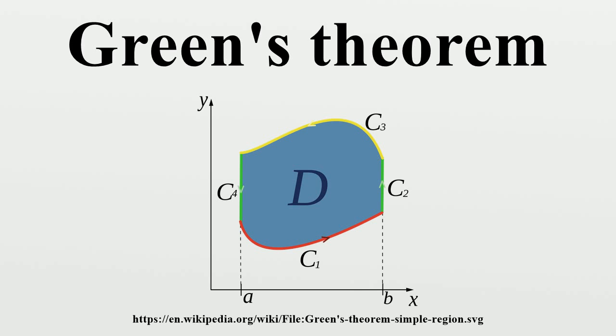On C2 and C4, X remains constant, meaning therefore, combining these, we get the result for regions of type 1. A similar treatment yields the result for regions of type 2. Putting the two together, we get the result for regions of type 3.